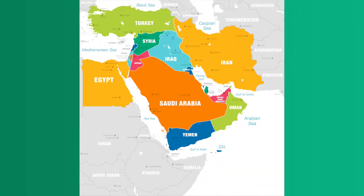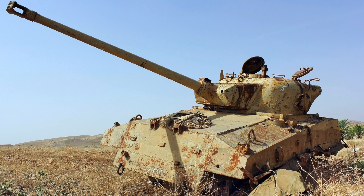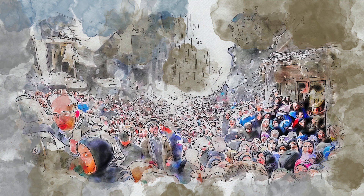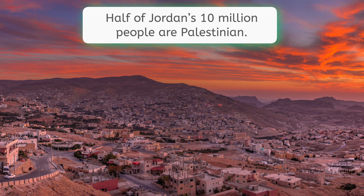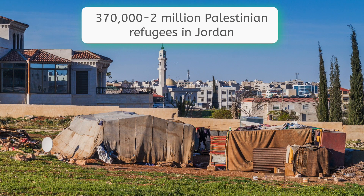In 1967, over multiple tensions and unresolved issues from past wars between Israel and surrounding Arab states, Jordan, Syria, and Iraq launched a surprise attack against Israel in an event which would later be called the Six-Day War. Israel surprised these states and the world by pushing the countries back and taking new territory, including the West Bank. During this period, many Palestinians fled newly acquired Israeli territory to, among other places, Jordan. To this day, about half of the Jordanian population of roughly 10 million are former Palestinians, and the number of Palestinian refugees in Jordan has ranged from 370,000 to over 2 million.